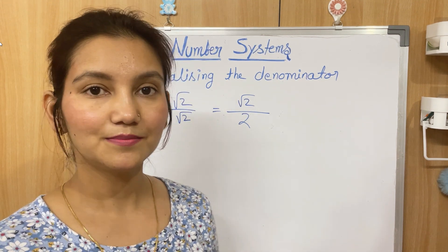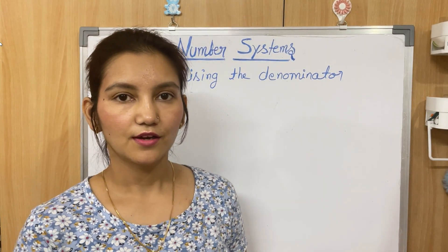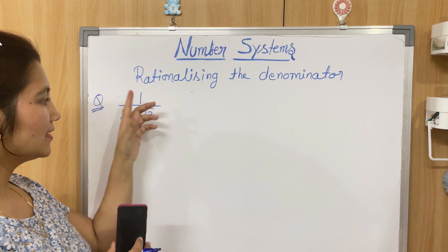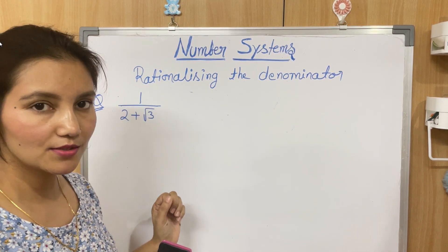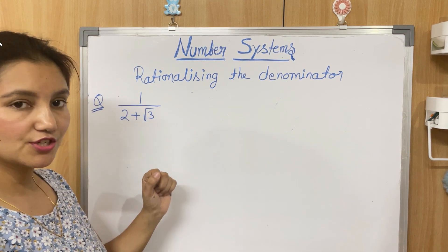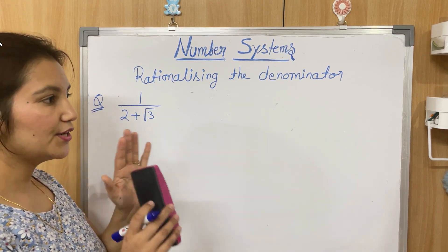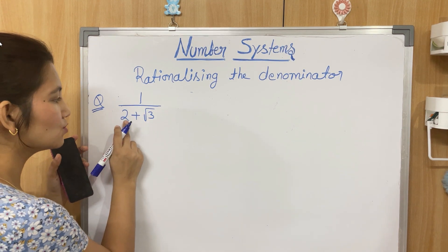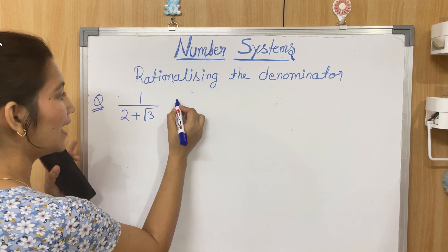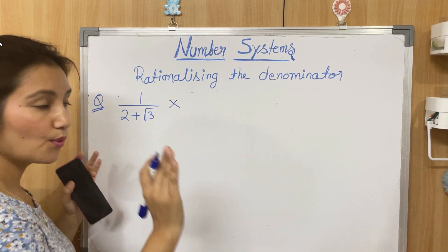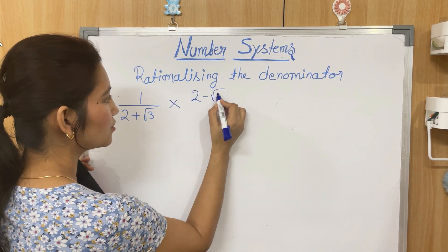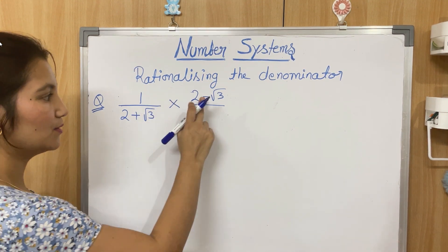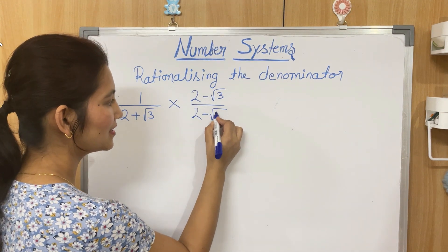Let's take one more example. Here we have to rationalize 1/(2 + √3). In the previous question it was just 1/√2, which was simple, but here we have 2 + √3. In such questions where the denominator is of this type, you just have to change the sign of the middle operation. It's 2 + √3, so we make it 2 − √3. We multiply both the numerator and denominator by 2 − √3, reversing the sign.